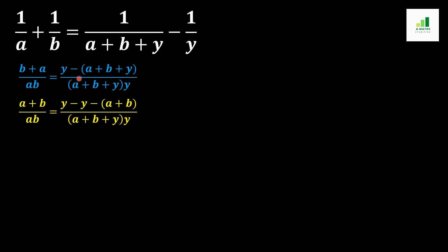This y comes out of the bracket and multiplies with the minus sign, so (a+b) with the minus sign remains. On the other side of the equation we arrange b+a as a+b. Now the +y and -y cancel out with each other.